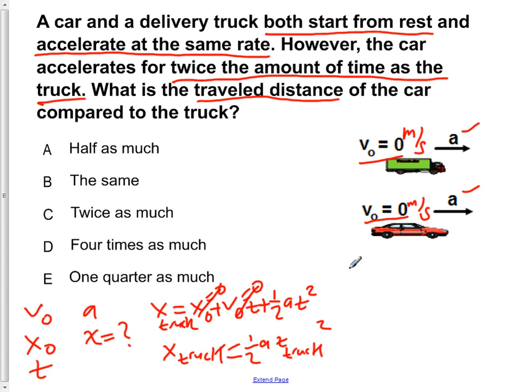Now, let's do the car. So if we do it for the car, we get x of the car is equal to x-naught plus v-naught t plus one-half A t squared. Our initial position for the car is also zero meters. Its initial velocity is also zero meters per second, so we can ignore that. So we see that the distance the car travels is equal to one-half A t of the car squared.